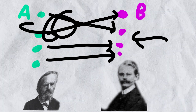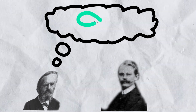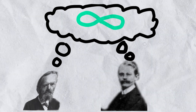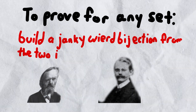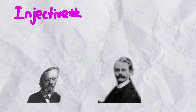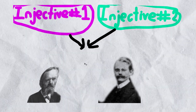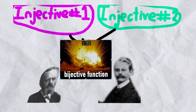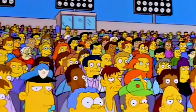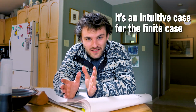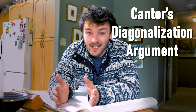This is not the case with the infinite case though — it gets a whole heck of a lot weirder when we start talking about infinite sets, because now you're dealing in this strange realm of infinity. To prove the Schroeder-Bernstein theorem for any set of finite or infinite length, you build a janky weird bijection from the two injective functions. You take the two injective functions, schmoop them together, and you get this weird bastard child of a bijection. It is a bijection — it's just kind of bad. All this is to say, it's kind of a boring proof. It's intuitive for the finite case, just dotting the i's and crossing the t's. Anyway, then we get into Cantor's diagonalization argument.